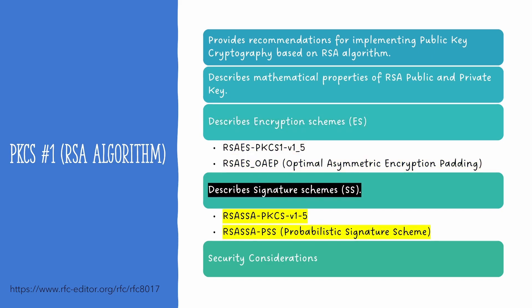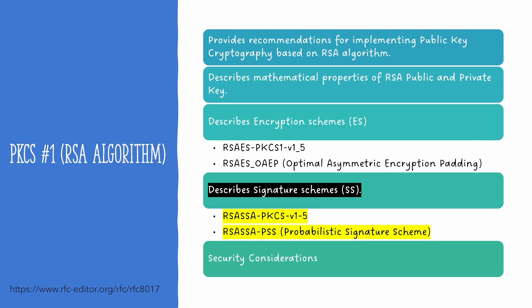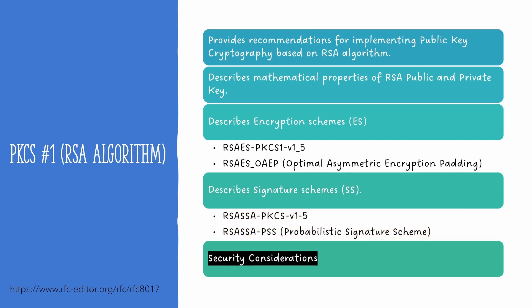PKCS#1 also describes two signature schemes. The first is RSASSA-PKCS, where SSA stands for Signature Scheme with Appendix. The second is RSASSA-PSS, where PSS stands for Probabilistic Signature Scheme. PKCS#1 also recommends some security best practices — one of them is to not use two schemes together. They recommend using only one scheme with a key pair.